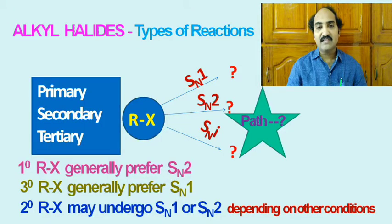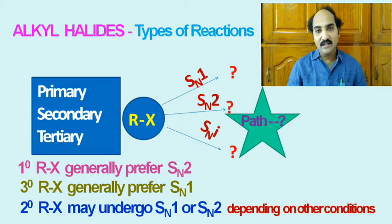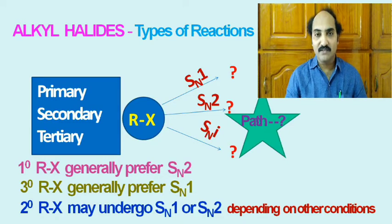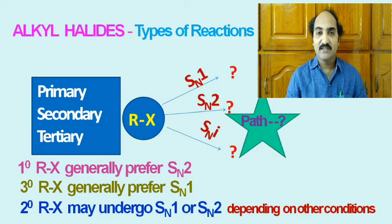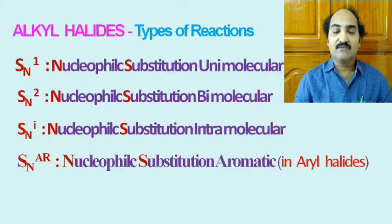After seeing the classification of alkyl halides into primary, secondary, and tertiary, we may wonder whether all these alkyl halides adopt the same path during nucleophilic substitution reactions. The answer is definitely not. So what type of path is chosen by different alkyl halides during nucleophilic substitution reactions? There are various types depending upon the mechanism path.